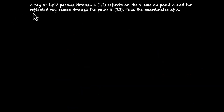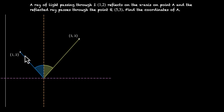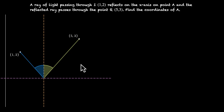Let's try one more problem. A ray of light passing through I (1, 2) reflects on the x-axis — the x-axis is the mirror — at point A, and the reflected ray passes through point R (5, 3). Find the coordinates of A. The ray passes from point I toward the x-axis, which acts as a plane mirror, reflects, and moves in a new direction through (5, 3). The point where it touches the x-axis is A — that's what we need to find.